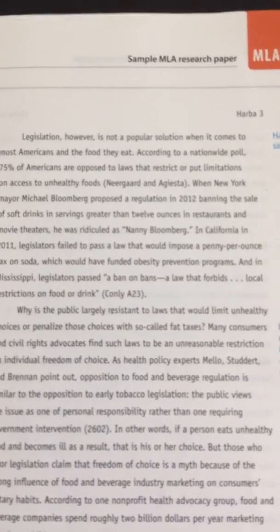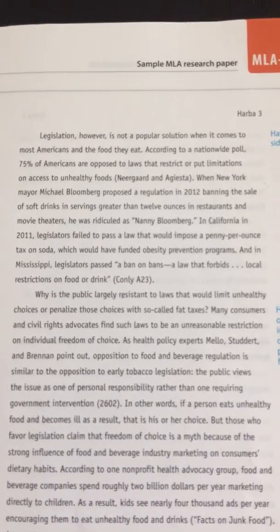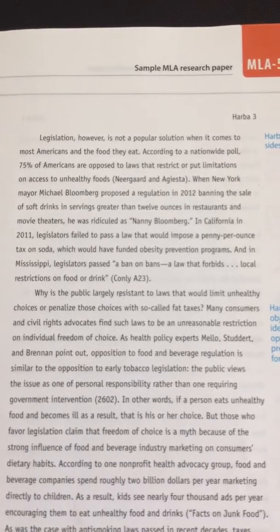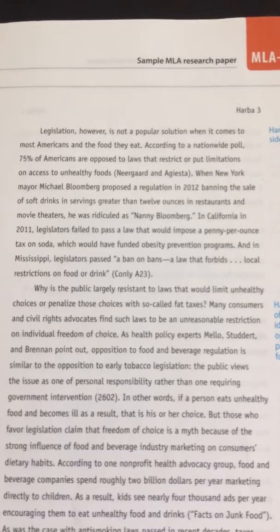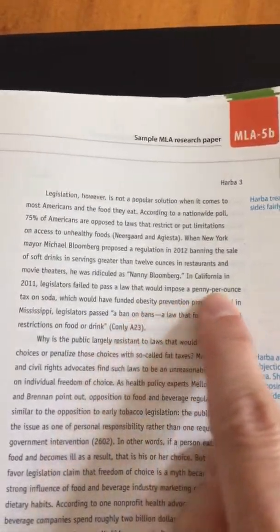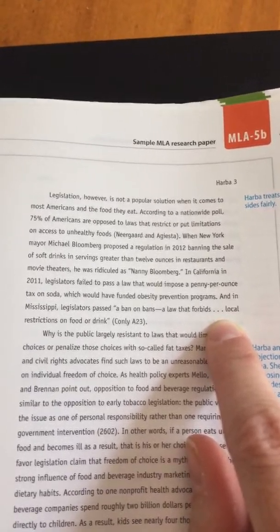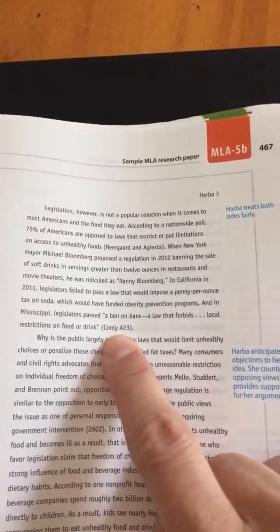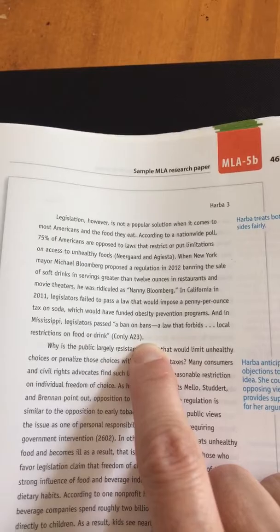I want to show you a couple of other quotations. Let's look at the top of page three of her paper: 'In California in 2011, legislators failed to pass a law that would impose a penny per ounce tax on soda, which would have funded obesity prevention programs. And in Mississippi, legislators passed a ban on bans — a law that forbids local restrictions on food or drink.' She does not provide a signal phrase here, but she's weaving — this is called quote weaving — weaving quoted information into her own sentence. Notice the ellipses, which means words in the original quote are being omitted. Because she did not offer a signal phrase, she puts the author's last name and page number in parentheses. The quote ends, then the author and page number, then the period.